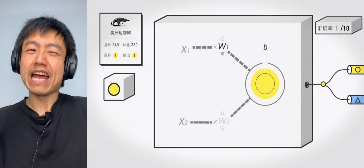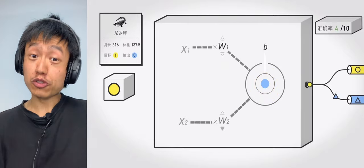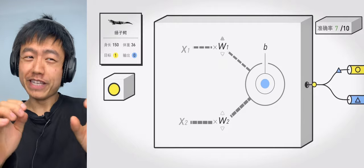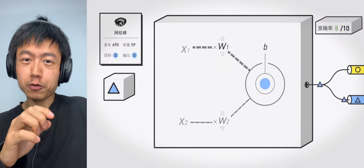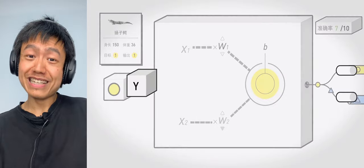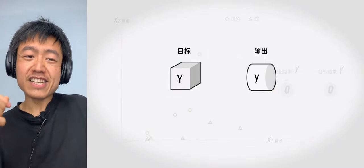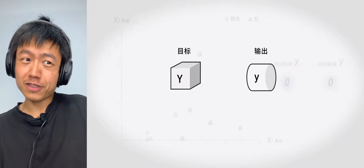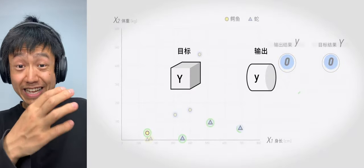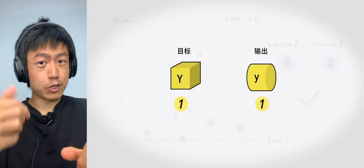Think back to the examples of crocodiles and snakes. If we want the machine to solve this problem, we need to set a target value, uppercase Y, and an output value, lowercase y. When the output value is consistent with the target value, that is, uppercase Y is the same as lowercase y, then its classification is correct.